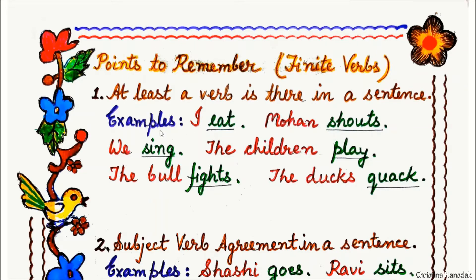Examples: I eat. Mohan shouts. We sing. The children play. The bull fights. The ducks quack. The underlined words, or the green colored words, are our finite verbs.